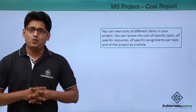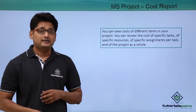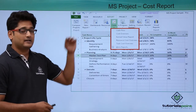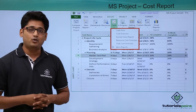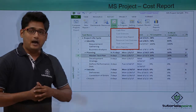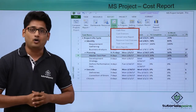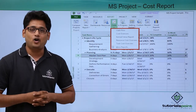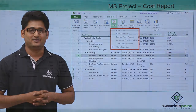Now one thing that comes to mind is where can you find this report. It can be found easily under the report tab, and if you go under the report tab under cost you can see a drop-down menu with all these options. We'll be discussing all these options in our practical approach.